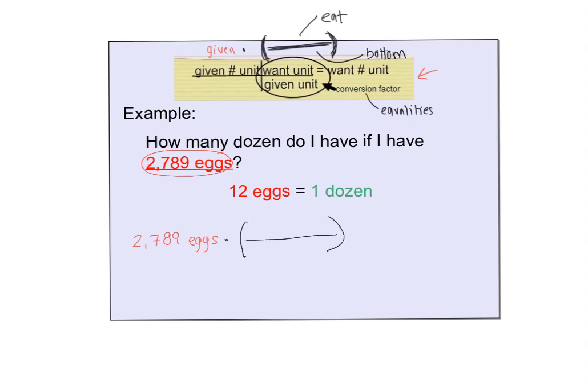Luckily I have an equality that's given to me, or sometimes you can look these up in a chart or Google them. The equality is a conversion factor. So I know that 12 eggs equals 1 dozen. One side of the equality will go on top, one side will go on bottom.